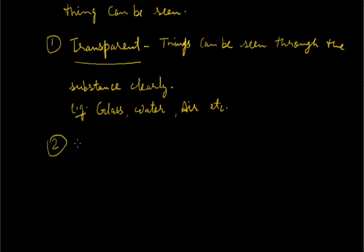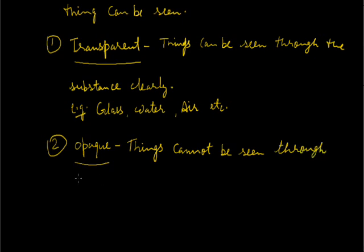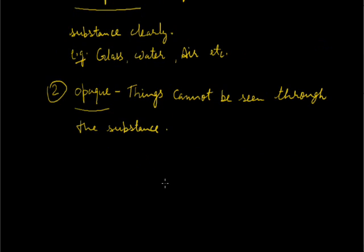Opaque material. When things cannot be seen through the substance, then such type of material is opaque material. For example, wood, cardboard, metals, these are examples of opaque materials.